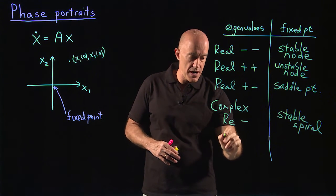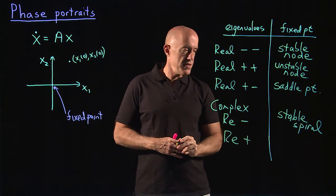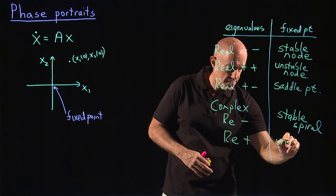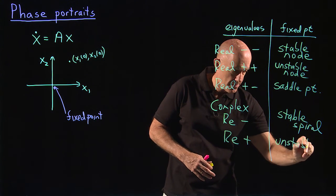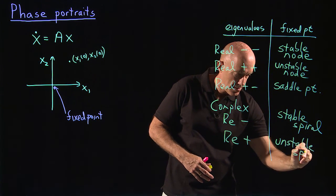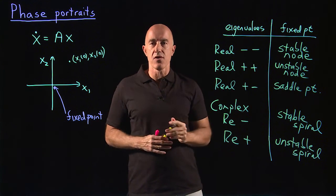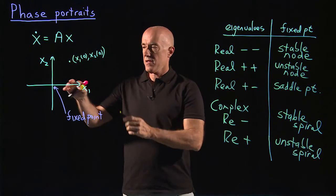And the solution then spirals into the origin. If the real part is positive, this is called an unstable spiral. So that's going to be our classification of the fixed point.